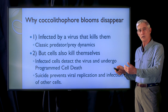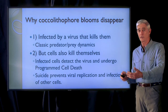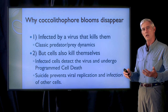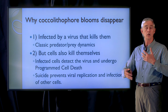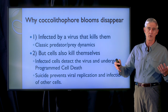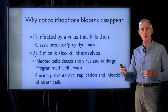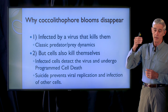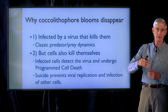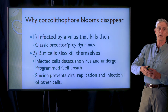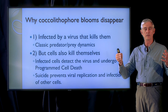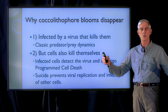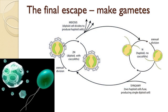By doing so, that individual cell essentially commits suicide. But they're clonal organisms, and so the clone mates of that cell are floating around in the water column. The thinking is that evolutionarily, that cell, once it's infected, by killing itself is saving its genetically identical copies elsewhere in the water column from becoming infected.